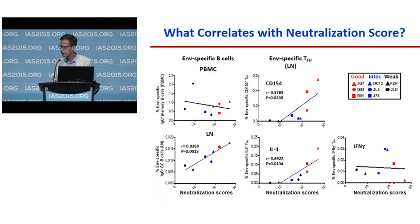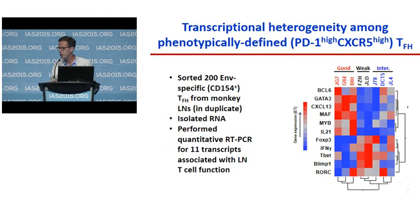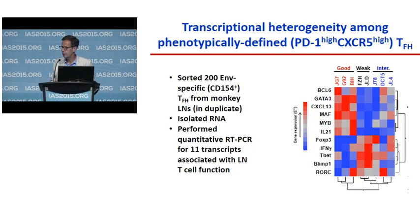Extensive somatic hypermutation is associated with good neutralization. We asked whether monkeys with better neutralization showed more somatic hypermutation. We sorted memory envelope-specific B cells from week 44 bone marrow, sequenced their immunoglobulin genes, and compared to a germline database. With between 60 and 150 individual clones sequenced, we found a very good correlation between neutralization score and average somatic hypermutation.